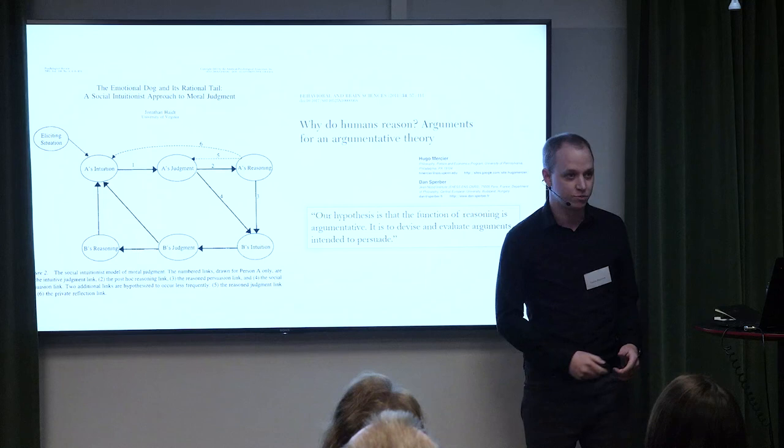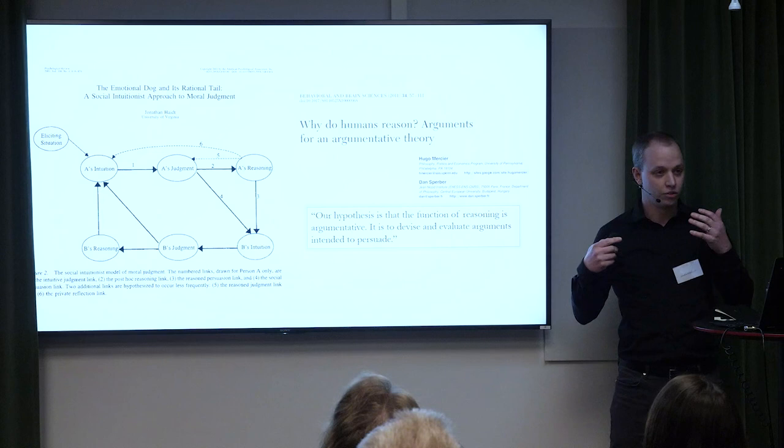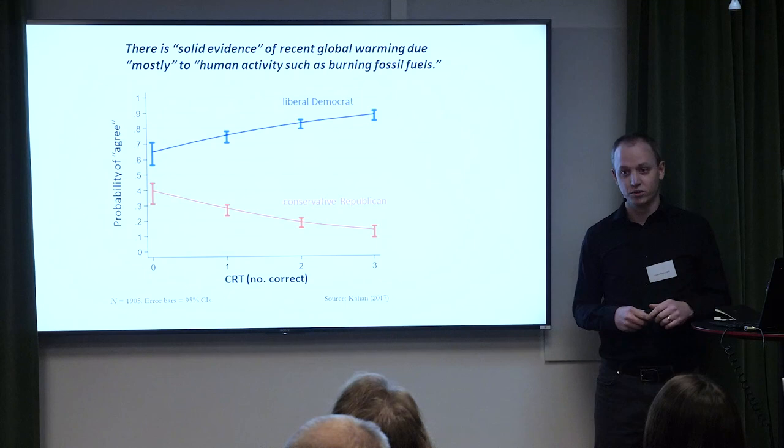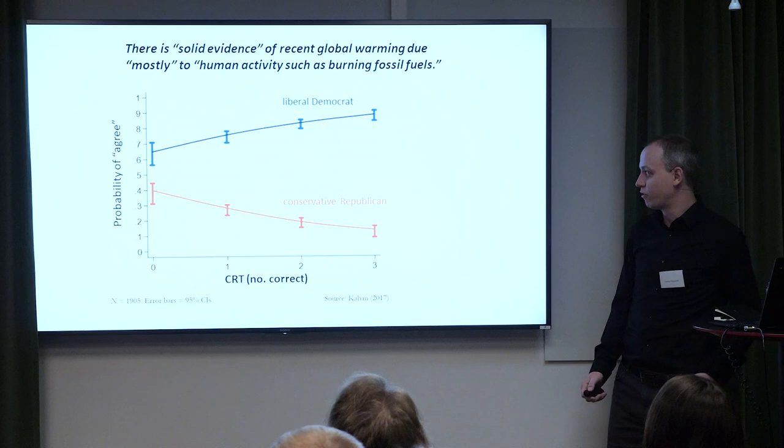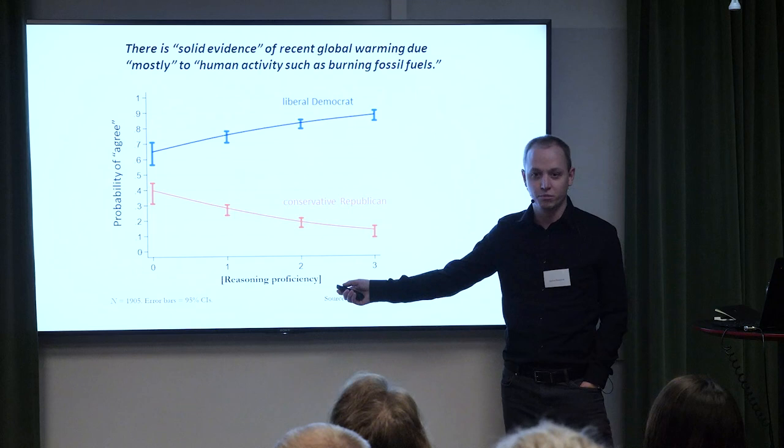Hugo Mercier and Dan Sperber have argued that the function of reasoning is argumentation — again, we reason like lawyers. My favorite example comes from Dan Kahan. Think of CRT as measuring reasoning proficiency for now. The finding is this: among Democrats, people who are essentially smarter are more likely to think that climate change is a problem.